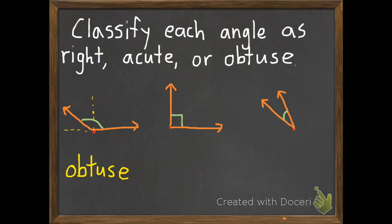Our middle angle here has a square here instead of a curve which helps us to know that that is a 90 degree angle or a right angle. And our last angle is really small. It's less than 90 degrees, so that means it's an acute angle.